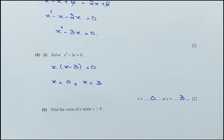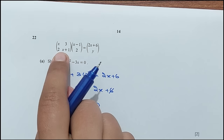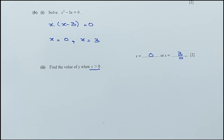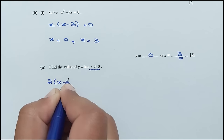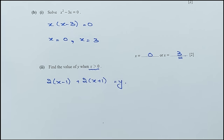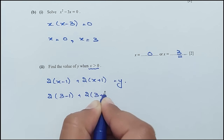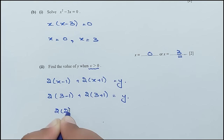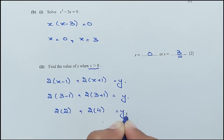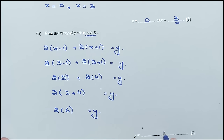For the second part, find Y when X is greater than 0, so X equals 3. Making another equation: 2(X−1) plus (X+1)×2 equals Y. Substituting X equals 3: 2(3−1) plus 2(3+1) equals Y, so 2(2) plus 2(4) equals Y, giving 4 plus 8 equals 12. The Y value is 12.